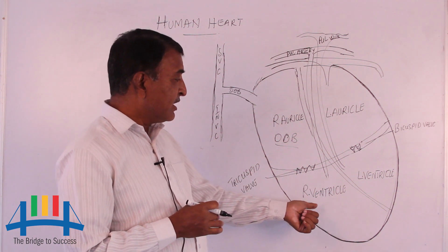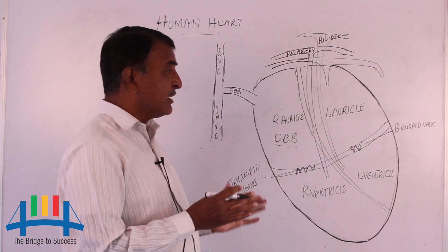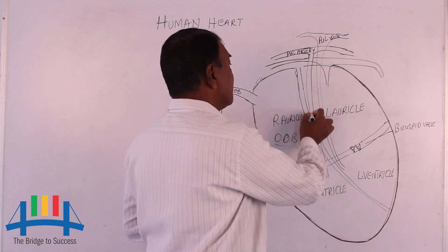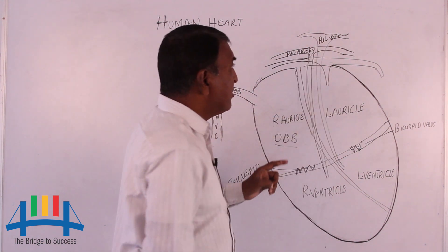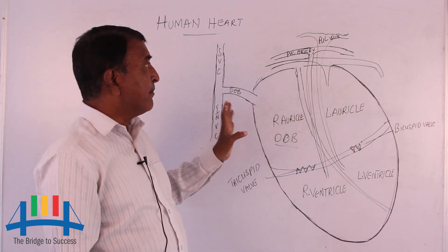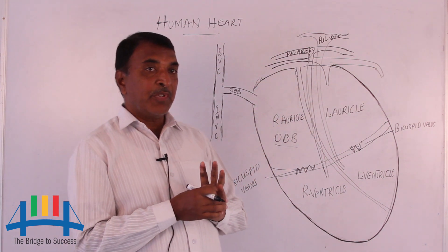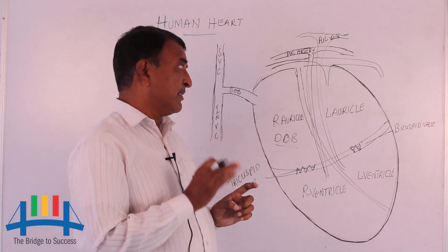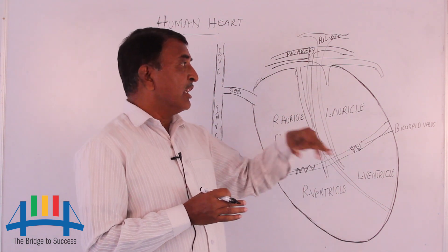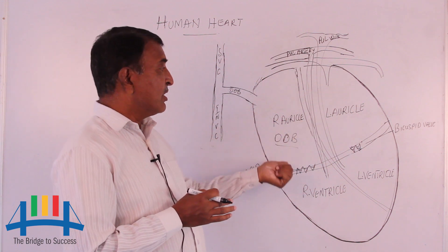As soon as the deoxygenated blood enters into the right ventricle, when the heart contracts, the deoxygenated blood is pushed through the pulmonary arteries. It enters into the two lungs — the right lung and the left lung. The lungs are where exchange of gases takes place: carbon dioxide is absorbed and eliminated, and oxygen is supplied through the blood back to the heart.